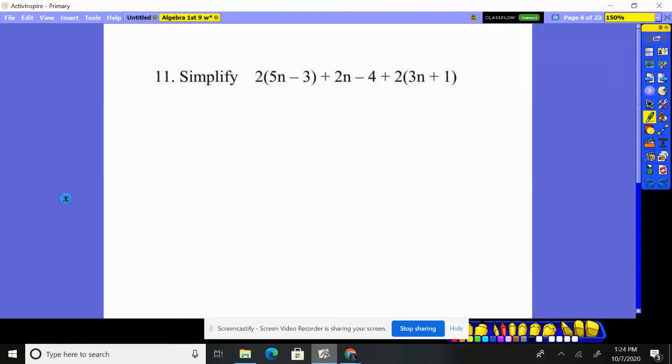Problem 11. It says simplify all this. So I must distribute through here and distribute through here. So it gives me 10n, take away 6, add 2n, subtract 4, plus distribute through here also. 6n, 2 times 1 is 2.